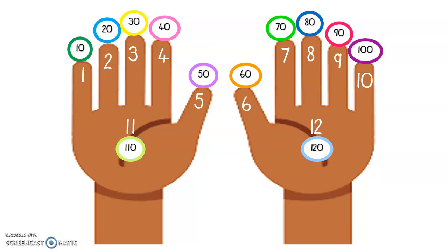Let's do 7 times 10 quickly. How many fingers in the air? 7. Let's go: 10, 20, 30, 40, 50, 60, 70. 7 times 10 is 70. So that is a quick, easy way to use your fingers to count in tens to get your 10 times table.